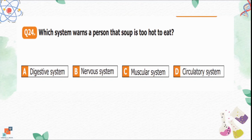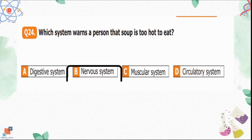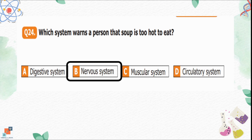Question 24: Which system warns a person that soup is too hot to eat? Option A is the digestive system, which helps digest food. Option B is the nervous system — this is the system that warns a person from danger, so it is the correct option. Option C is the muscular system, which is about power. Option D is the circulatory system, which manages blood flow in the body.